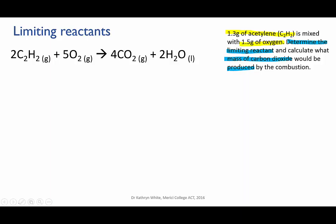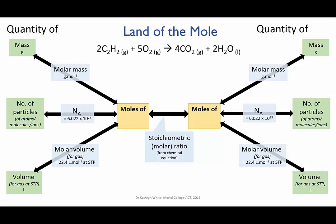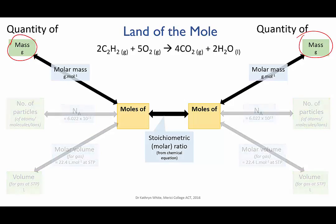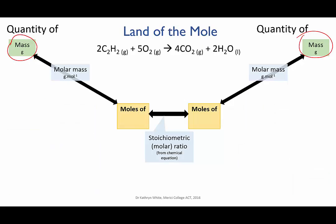This is a multi-part calculation. The first thing to do is to sort out what steps are going to be needed. You're given masses of reactants, and you're asked to calculate a mass of product, so you're going to have to use the land of the mole. Since we're going from mass of reactant to mass of product, I'll take off the particle and volume calculations because we don't need those.